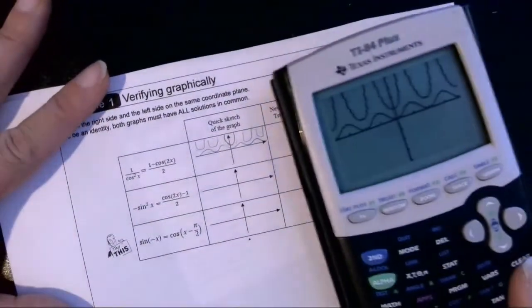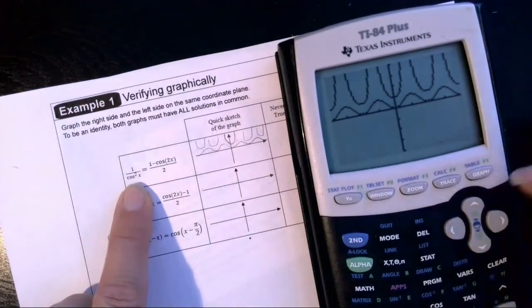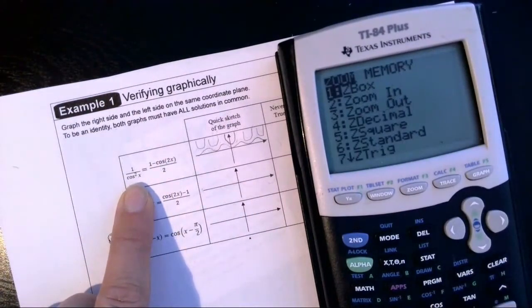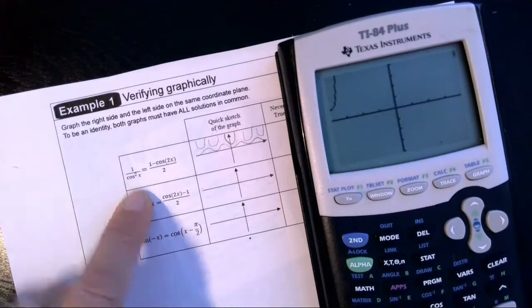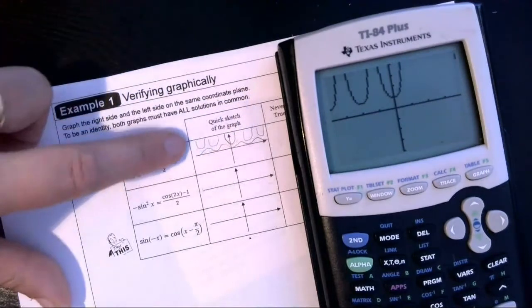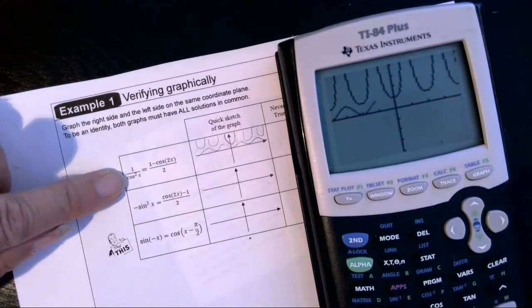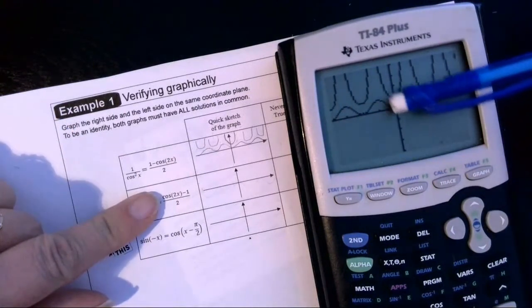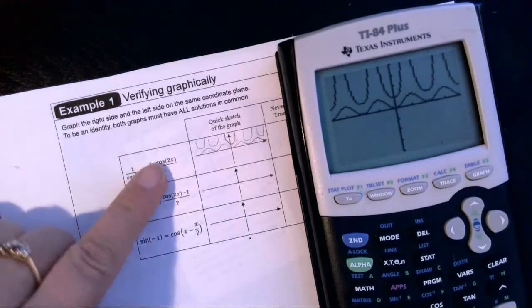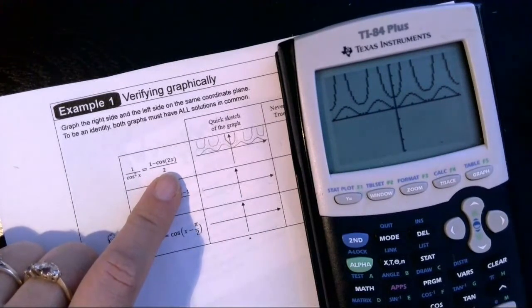And there's our rough sketch. So when the graph first started, if we do it again, it starts with the left side because that was our y1. So zoom 7. And that means that these U-shapes up across here that are not touching the x-axis, that's our graph for 1 over cosine squared of x. Then you'll notice the second one that appears, that's our y2. So that's the graph of 1 minus cosine of 2x, that all divided by 2.